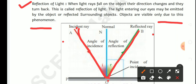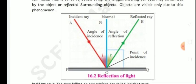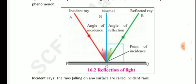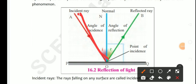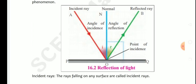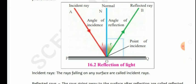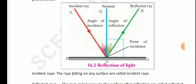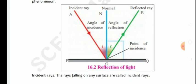Due to this phenomenon of reflection of light, look at this diagram: AO is the incident ray and OB is the reflected ray, and N-O is the normal. These are the laws of reflection — angle of incidence and angle of reflection.